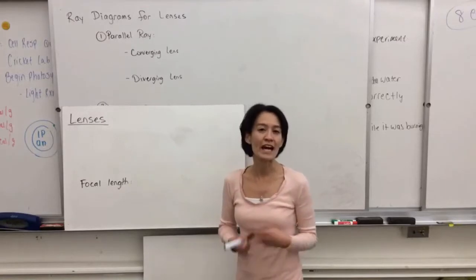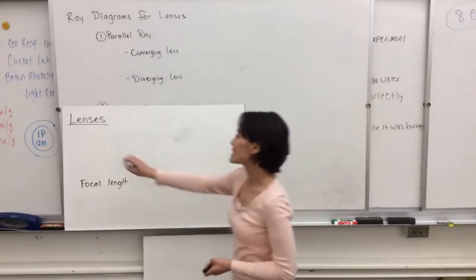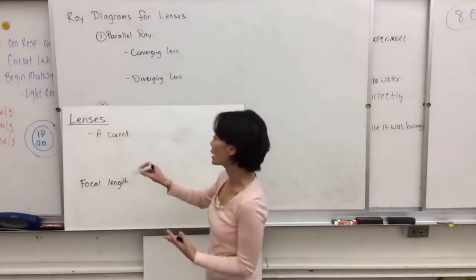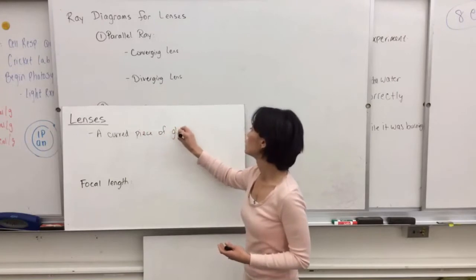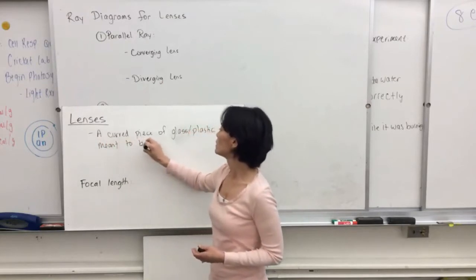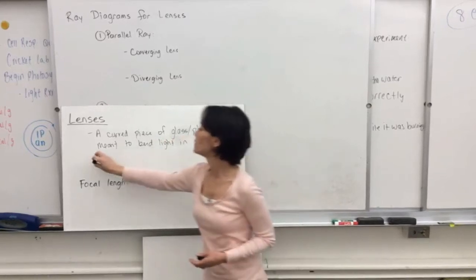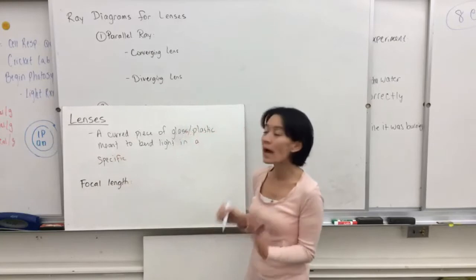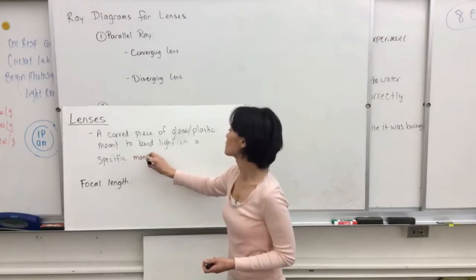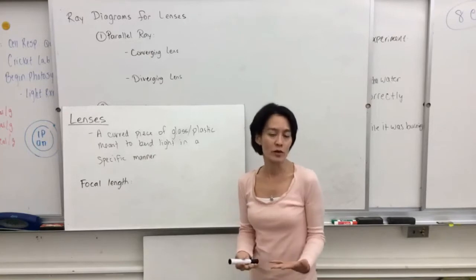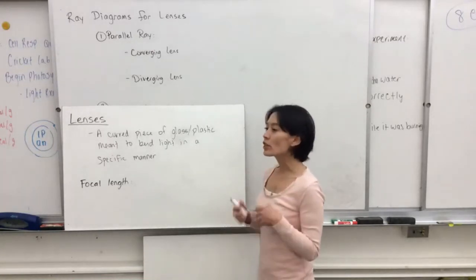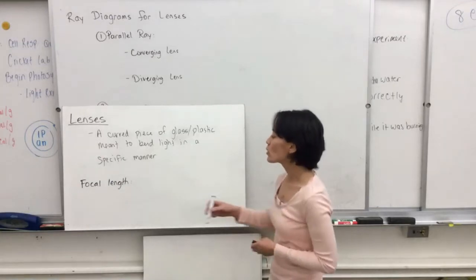This video is meant to introduce you to the idea of lenses. A lens is a curved piece of glass or plastic that is meant to bend light in a specific way. The pattern with which it bends the light depends on the shape of the lens. If you have a lens that is really curved, you're going to have a certain amount of bending occur. If you have a lens made of glass versus plastic, you're going to have a different amount of bending, and those nuances are reflected in what's called the focal length.